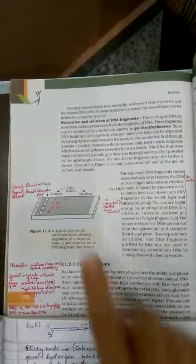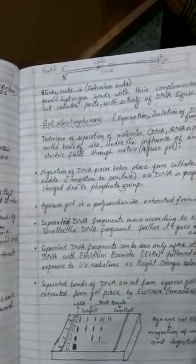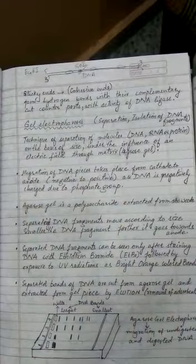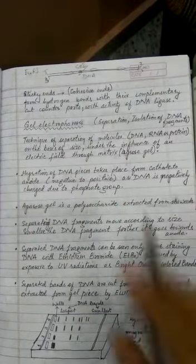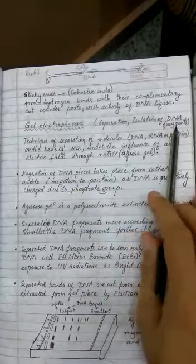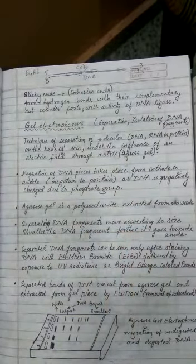So the next important thing, from where 3 marks questions as well as 5 marks questions are generally always expected in one of the sets in the board exam, a very important concept is the gel electrophoresis. So let's understand what exactly this concept is. The next step after making cuts is the gel electrophoresis and this concept is for separating and isolating the DNA fragments. Now what is gel electrophoresis?